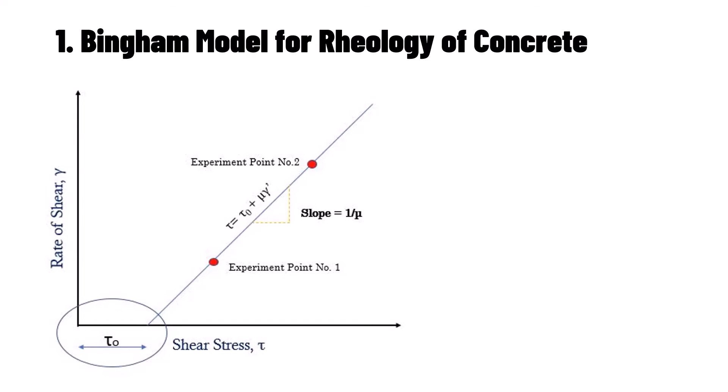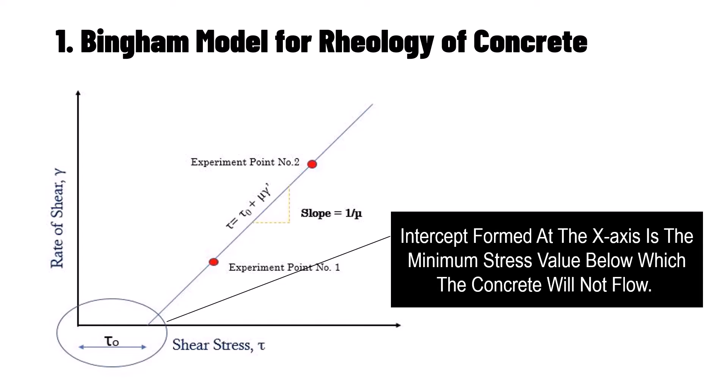Instead, it starts at a particular value from the x-axis as shown. The test set formed at x-axis is the minimum shear stress value that is existing within the fresh concrete before it starts to flow.